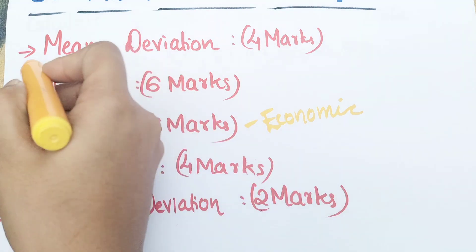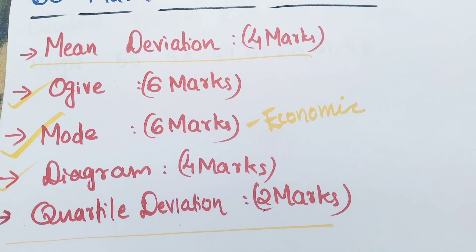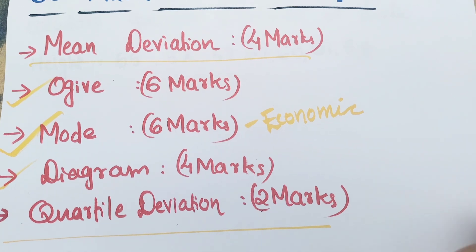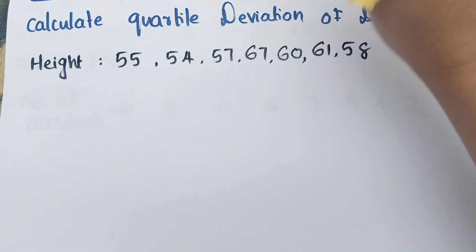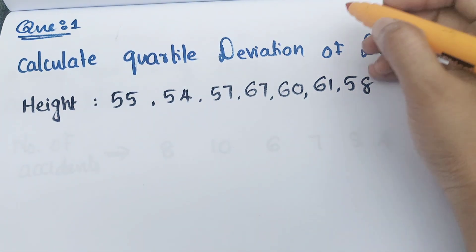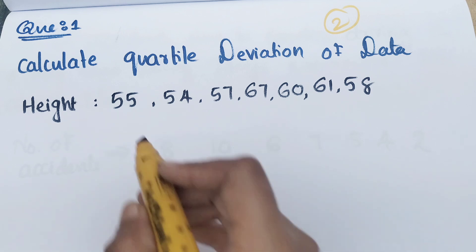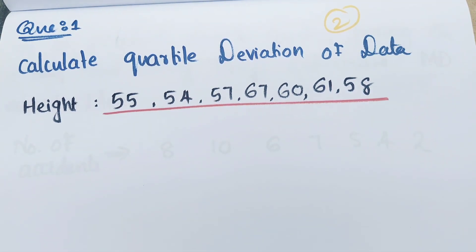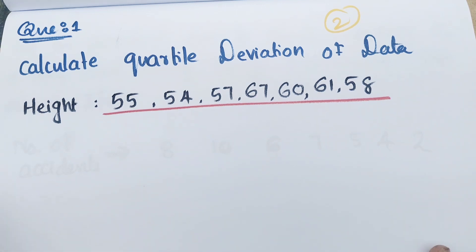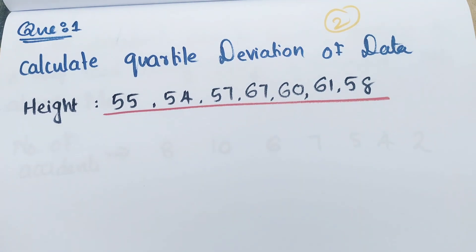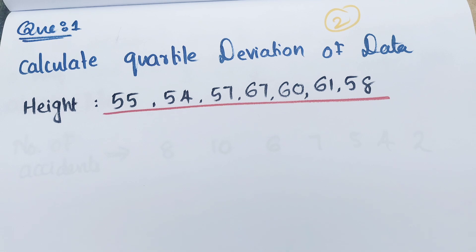We don't have any data. Mean deviation is 4 marks. Quartile deviation is 4 marks, quartile deviation is 2 marks. That's a missing question. I'm going to tell you where you have to know how mean deviation is calculated. We will tell you what we have to answer. The 2 questions are missed. Calculate quartile deviation of data. This data is individual series. Frequency is not individual series — there is individual series, continuous series, and discrete series.